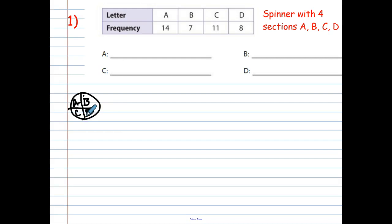So let's calculate the probability. Probability of A is it happened 14 times. We'd spin A 14 times. How many times did we spin it all together? We need to add all four of these numbers together. 21, 22, 32, we get 40 times. So this is 14 over 40 here. Or I can recognize they're both even numbers. So I can divide them by 2 and get 7 over 20.